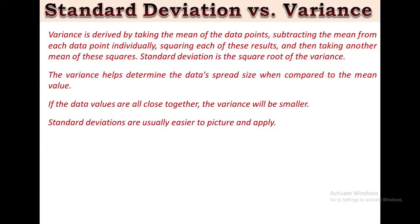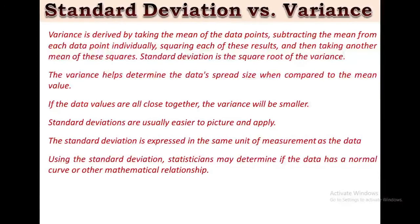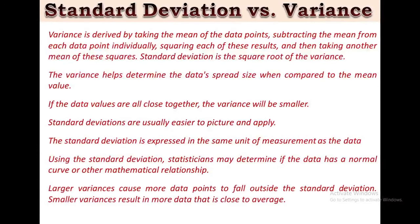On the other hand, standard deviations are usually easier to picture and apply. Standard deviation is expressed in the same unit of measurement as the data, which is not necessarily the case with variance. Using standard deviation, researchers may determine if the data has a normal curve or other mathematical relationship. If the data behaves in a normal curve, then 68% of data points will fall within one standard deviation of the average or mean, whereas larger variance causes more data points to fall outside the standard deviation. Smaller variance results in more data that is close to average.